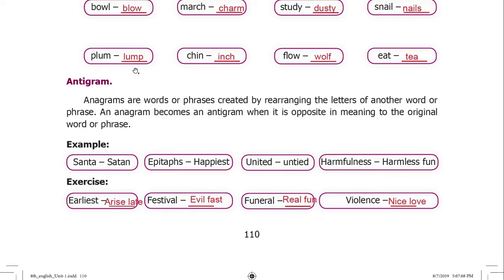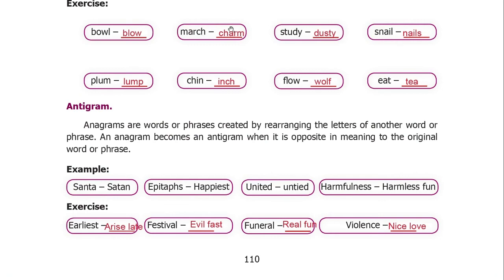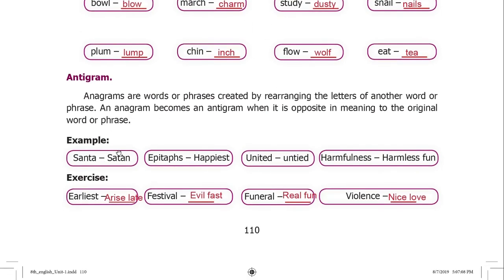Antigram. Anagrams are words or phrases created by rearranging letters of another word or phrase. An anagram becomes an antigram when it has the opposite meaning to the original word or phrase — the meaning is directly opposite.